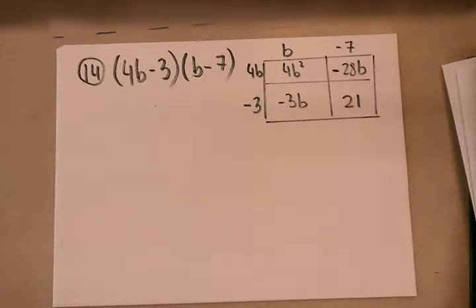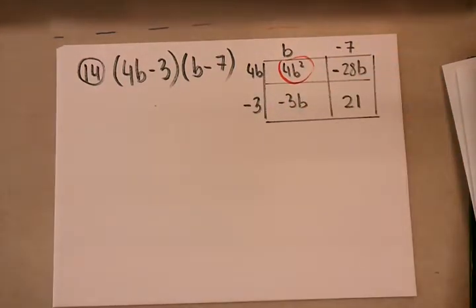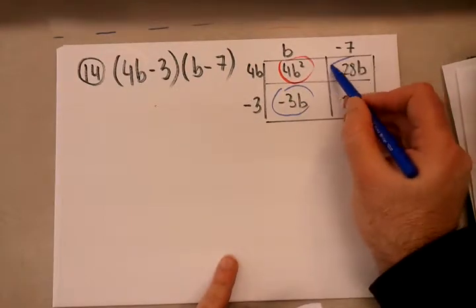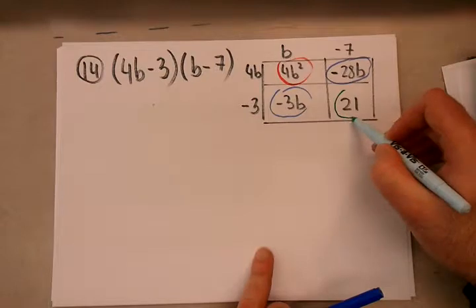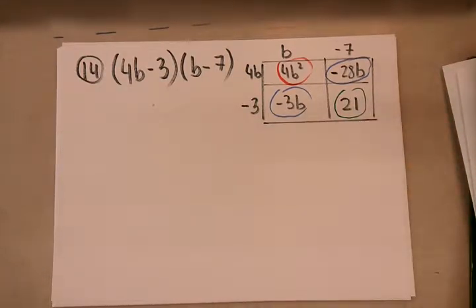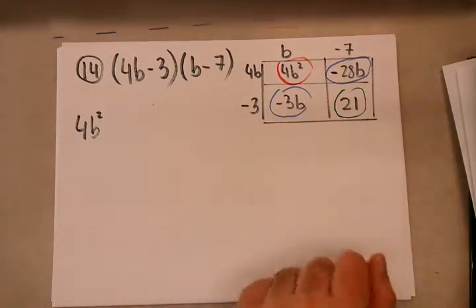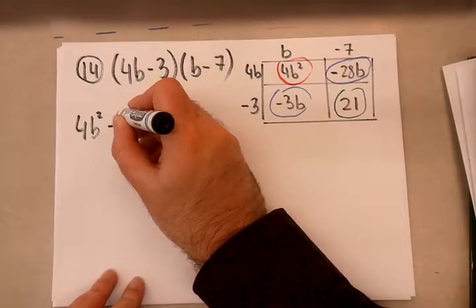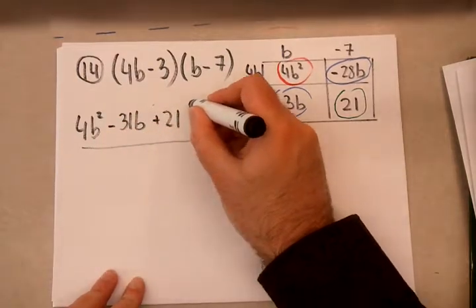Then I go ahead and find any similar degree monomials and highlight them. For my second degree, I have no counterparts — it's all alone. But for my first degree monomials, I do have a pair. And my zero degree is all alone, just like the second degree. So I combine anything of the same degree: negative 3b and negative 28b gives us negative 31b. The 4b squared just gets written out, and the 21 gets written in. So that's the answer to that problem.